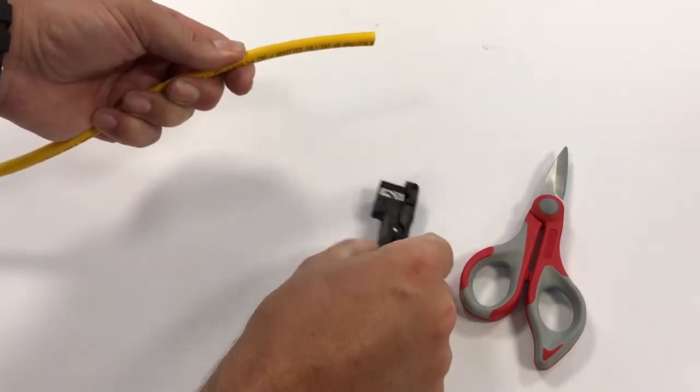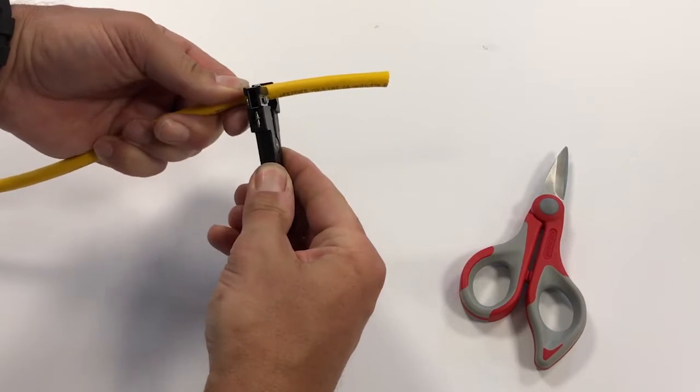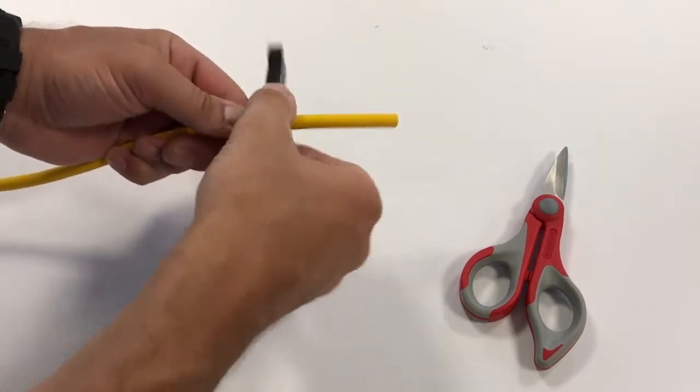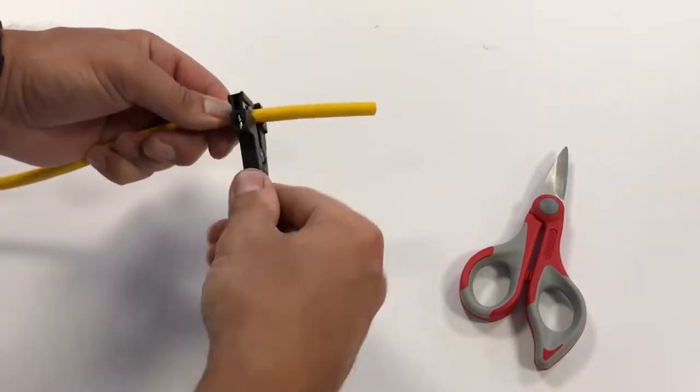We'll take our cable and our ringer and go about two or three inches down the jacket and use our ringer to ring that outer jacket.